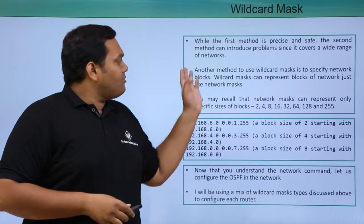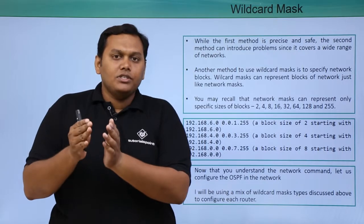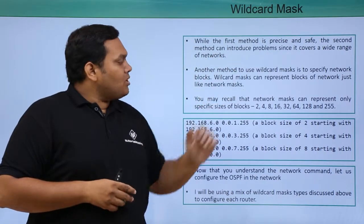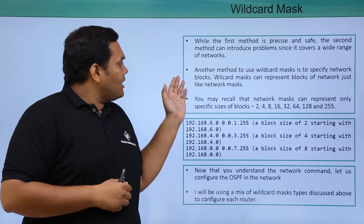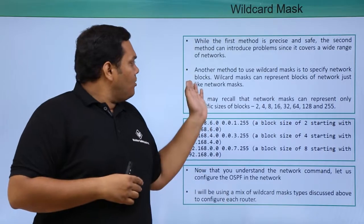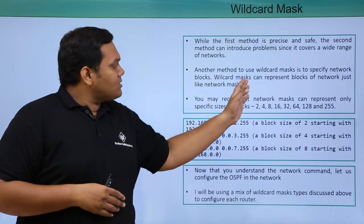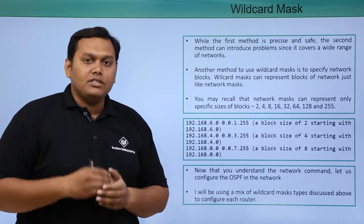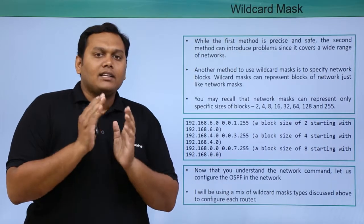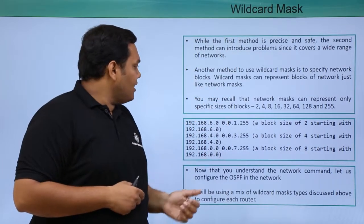While the first method is precise and safe, the second method is widely used but can create problems in wide range networks. Another method is to specify network blocks, where wildcard masks can represent blocks of networks just like network masks, and can also represent a set of blocks.